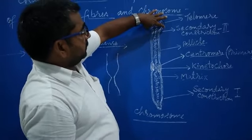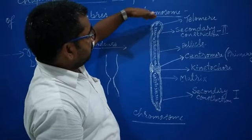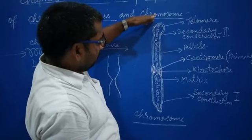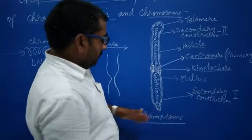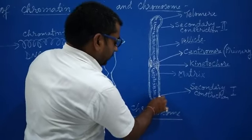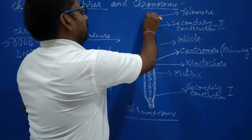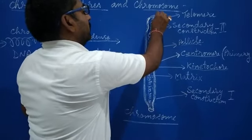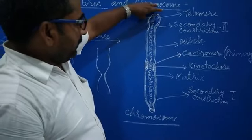If we see the length of entire chromosome, at the ends—at the terminal end and the lower end—another curve is formed. You can see this curve. This curve is known as secondary constriction.